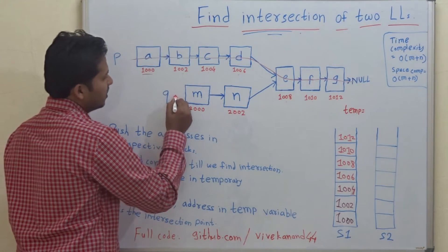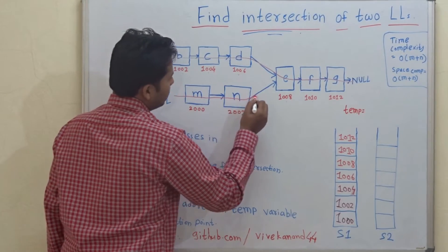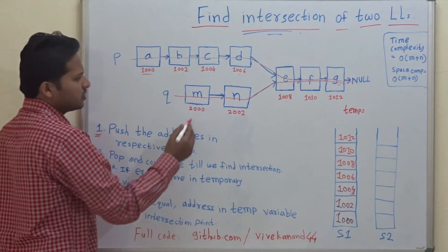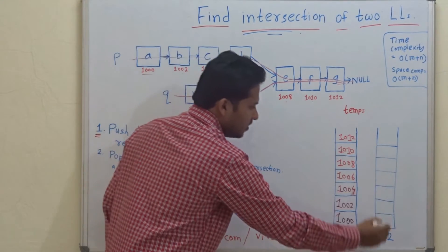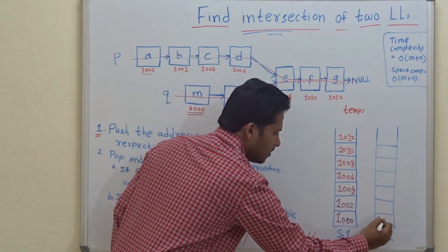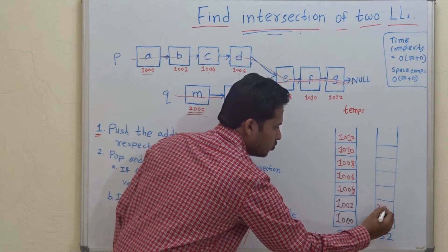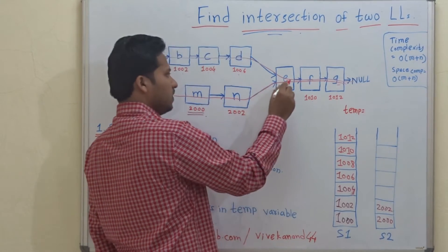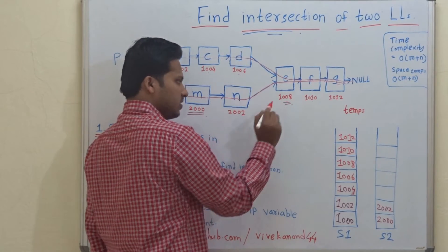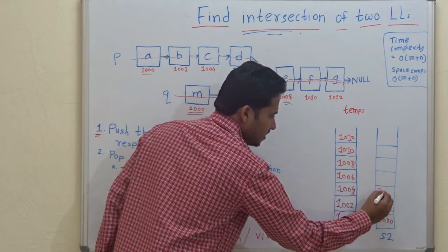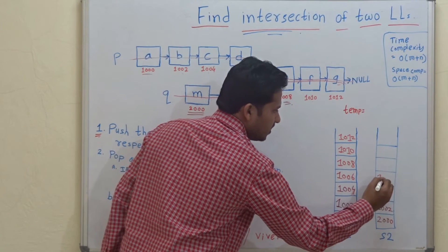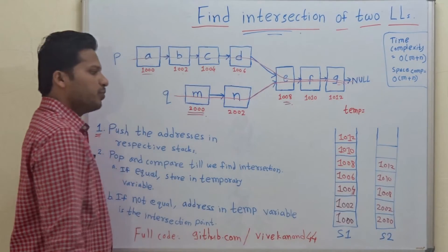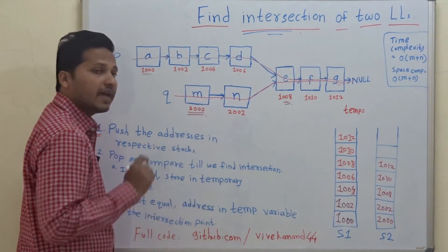Now let's push the addresses of linked list 2 into stack two. The first address is 2000, then 2002, then 1008, 1010, and 1012. So we have pushed all the addresses of the second linked list into stack two.